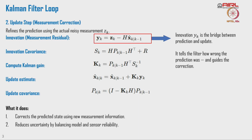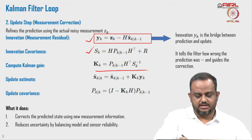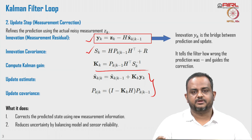The next step is the updation step, where first the innovation vector is calculated, then the innovation covariance is calculated, and then we compute the Kalman gain, which is the contribution from R. This Kalman gain is used to update the state estimation and update the covariance. This keeps on repeating as many times as needed, specified by the time accordingly.